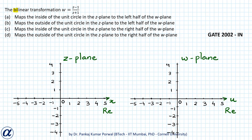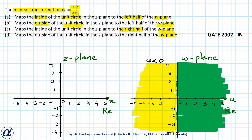In this question we are given a bilinear transformation w equals z minus 1 upon z plus 1, and all four choices talk about mapping either inside or outside of the unit circle onto either the left half or the right half of the w plane. The left half of the w plane is given by u less than 0, and the right half is given by u greater than 0. So we basically need to impose a constraint on the real part of w.